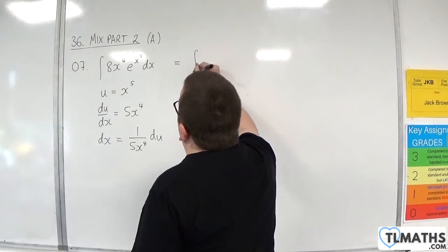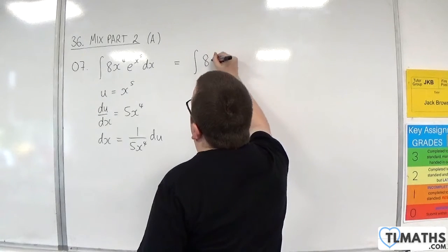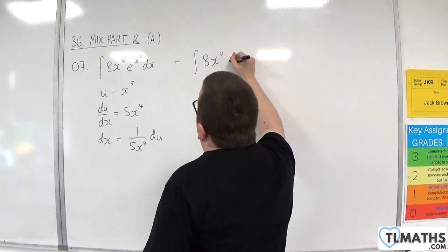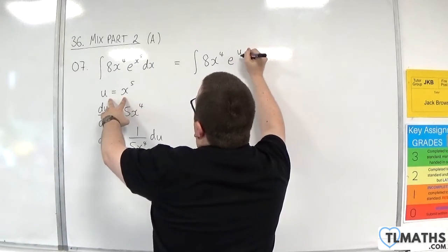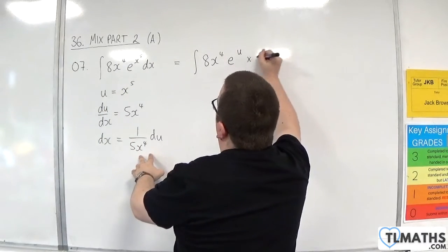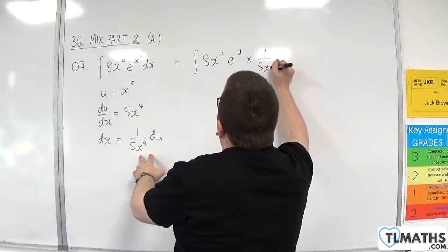So we'll have the integral of 8x to the 4, e to the x to the 5, which is u. And the dx is replaced with this, so 1 over 5x to the 4 du.